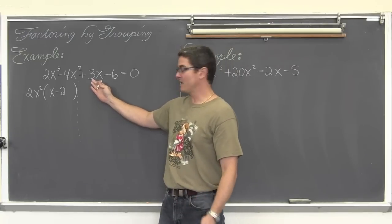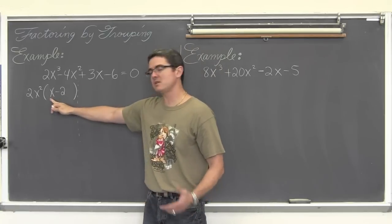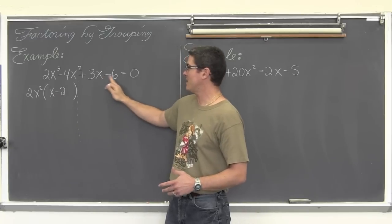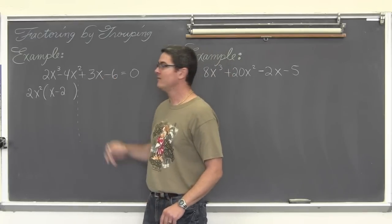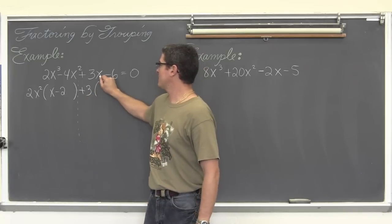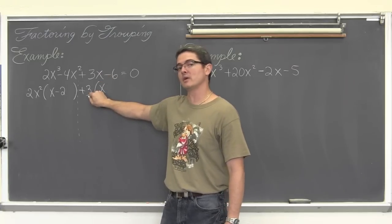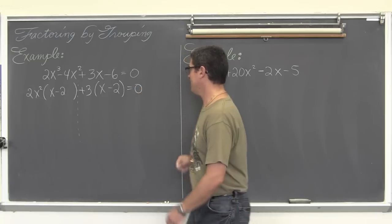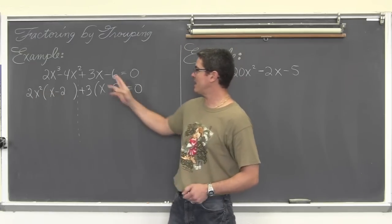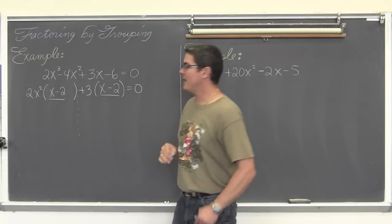We have a coefficient again of 3 and 6 — both divisible by 3. My x here is positive and my next x term is positive. My constant is negative 2, and over here my constant is negative 6. So my signs are good. I just need to take the 3 and factor it out of those last two terms. I am going to factor out a positive 3: 3x divided by 3 is 1x, and negative 6 divided by 3 is negative 2. I have pulled 2x squared out of the first two terms and factored 3 out of the last two terms, and here I have got a matching factor — x minus 2.